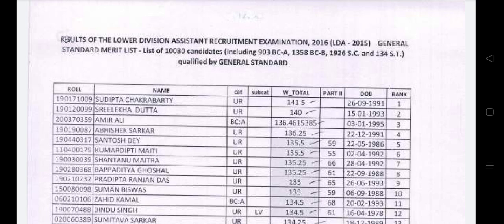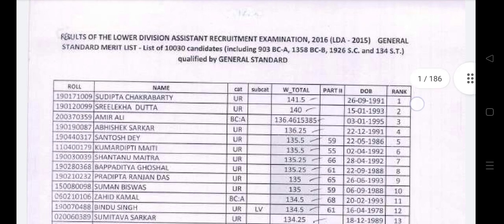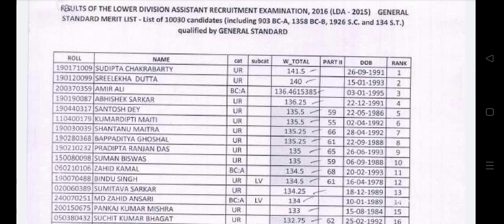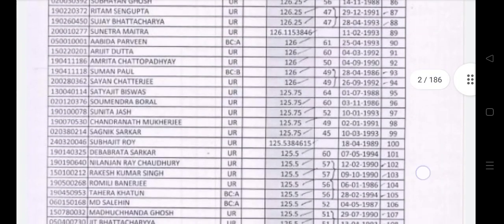The list includes 903 OBC-A, 1358 OBC-B, 1926 SC, and 134 ST category candidates qualified by general standard. The list contains selection statistics and marks for all candidates. Rankings and marks are listed, with the top rank at 141.5 marks.